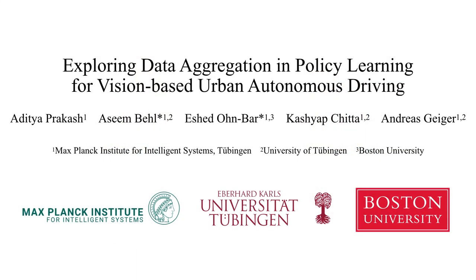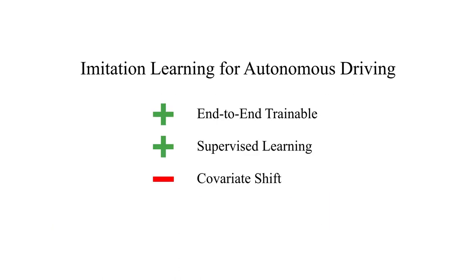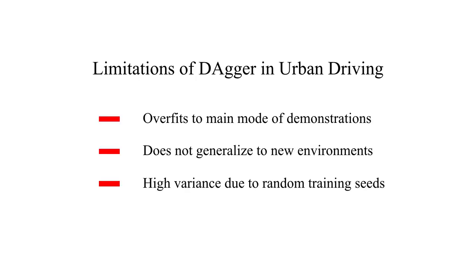Hi, my name is Aditya Prakash and I'm excited to share our work exploring data aggregation in policy learning for vision-based urban autonomous driving. Imitation learning is the dominant paradigm for autonomous driving. However, in the presence of covariate shift, it suffers from the compounding error problem resulting in failure cases. Dagger is a common technique to handle covariate shift, but we observe several limitations of dagger in terms of generalization issues and unstable driving policies.